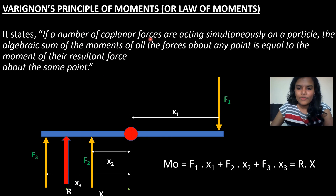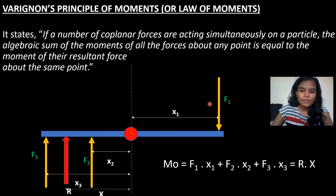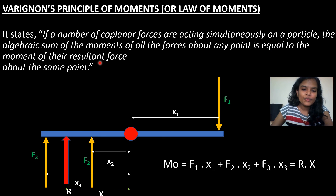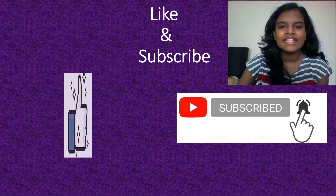If a number of coplanar forces are acting simultaneously, the algebraic sum of the moments of all the forces about any point equals the moment of their resultant force. That is: F1x1 + F2x2 + F3x3 = R × x.